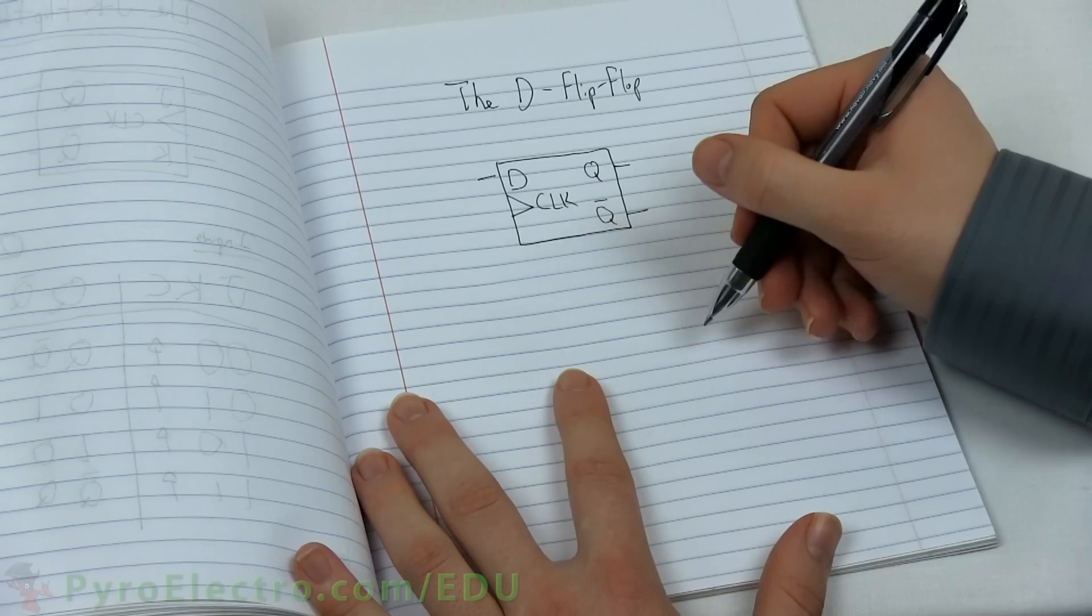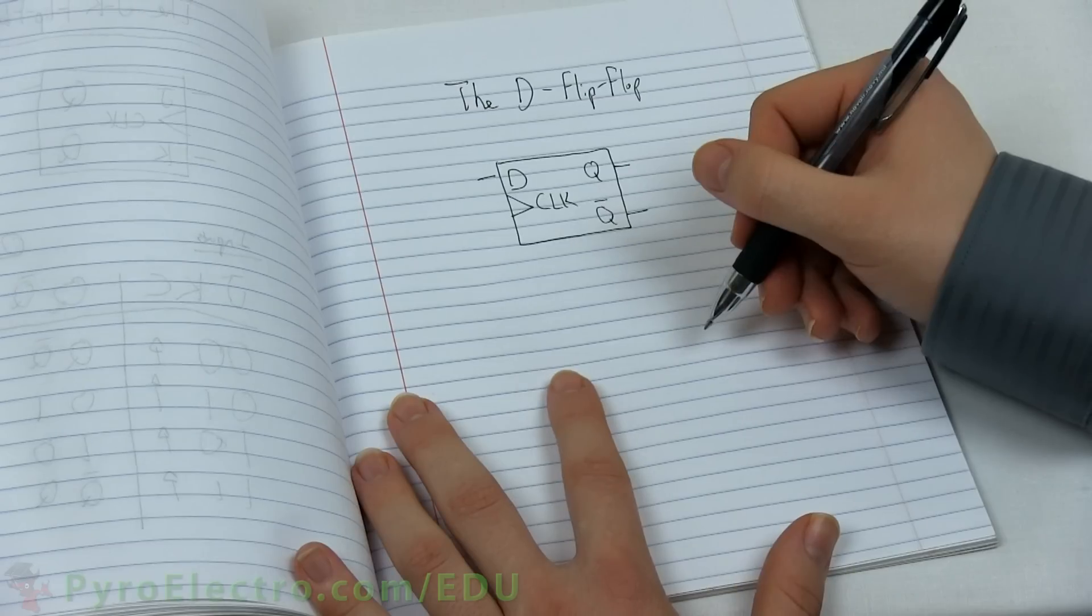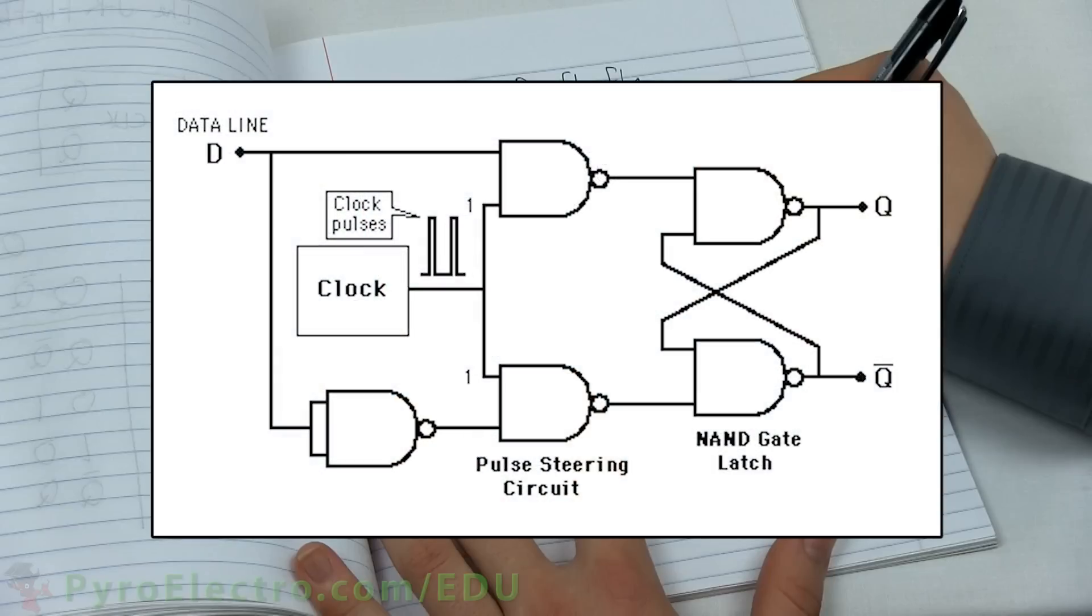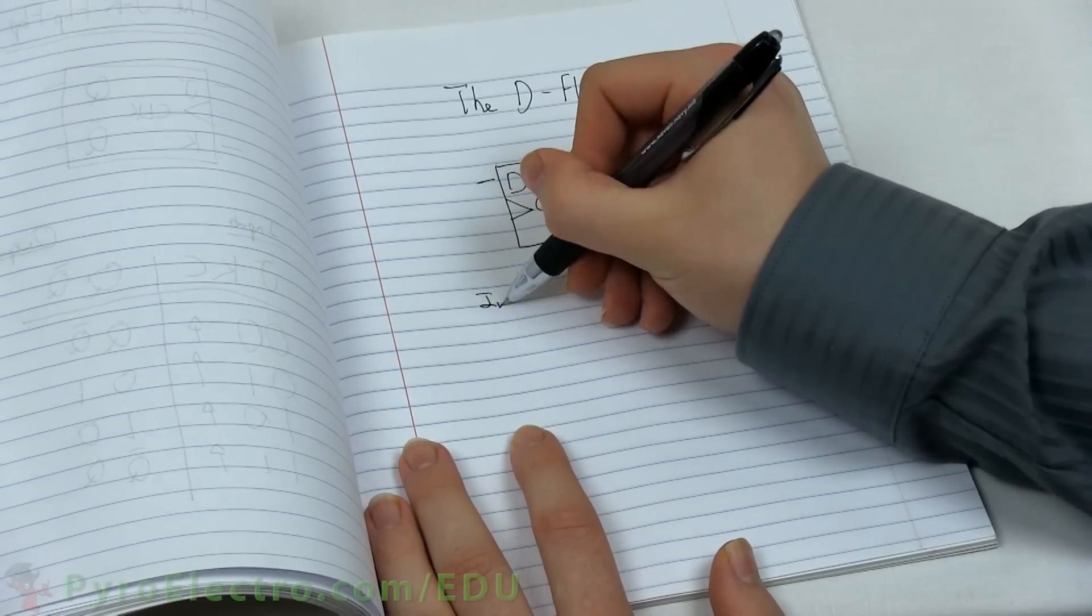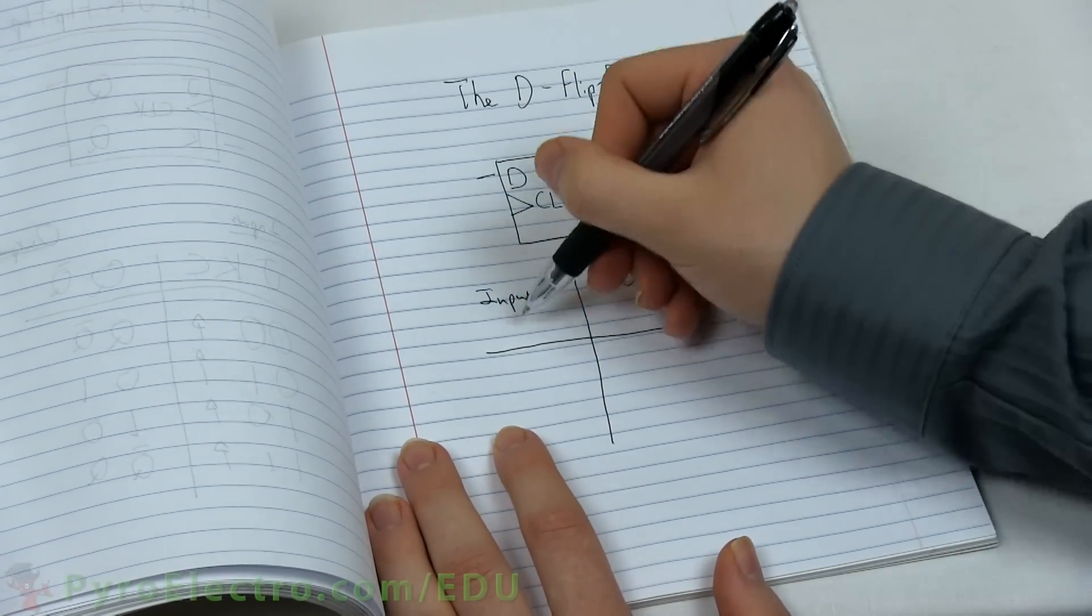However, just like the JK flip-flop is a combination of smaller logic gates, the D flip-flop can be built purely with NAND gates creating a logic diagram that looks like this. However, don't focus on that messy diagram. Instead, let's move on and see how this thing works. The truth table for a D flip-flop looks like this.